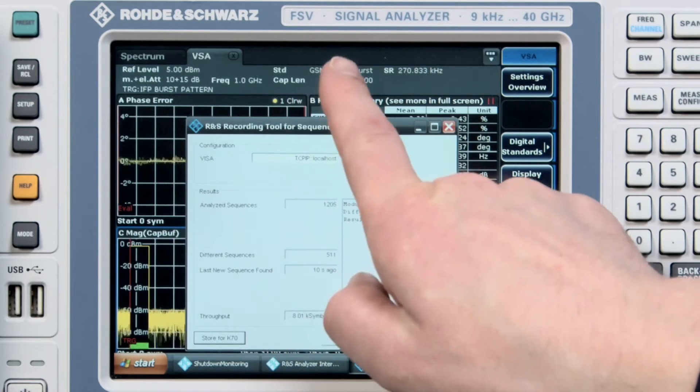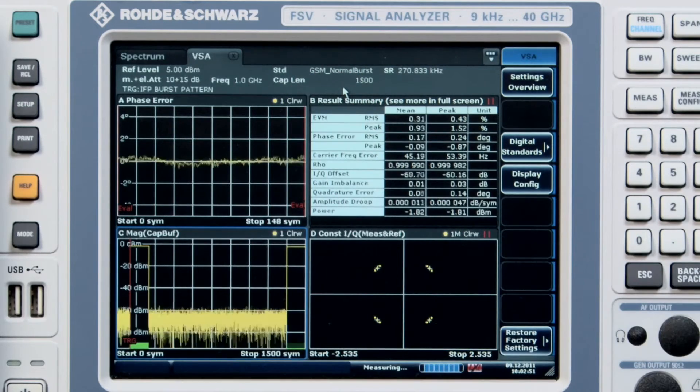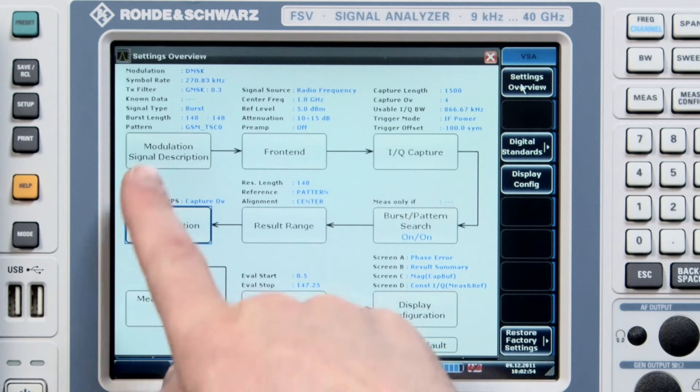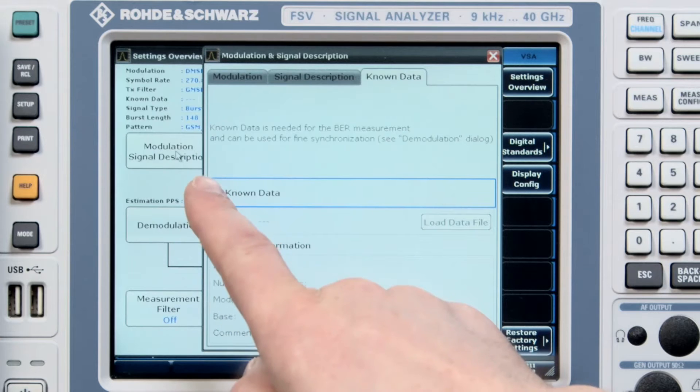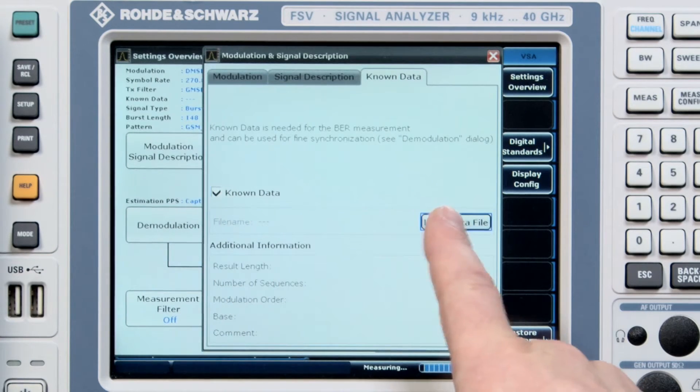Once we've saved that sequence out, we can then load that into the vector signal analyzer software using the modulation signal description tab in the FSV. We just enable known data and then we need to load the data file.